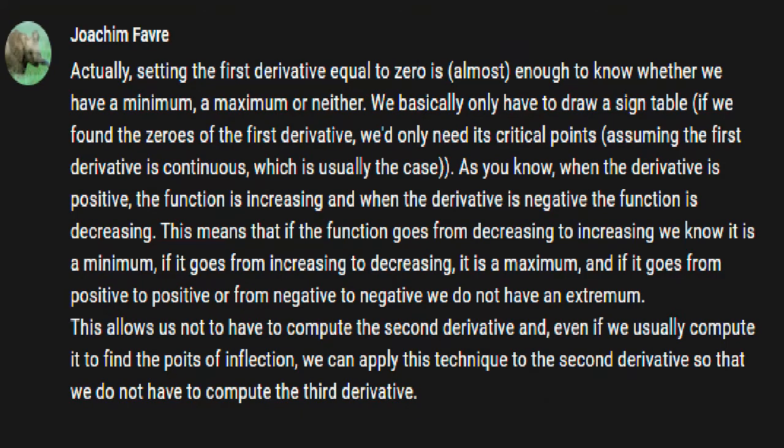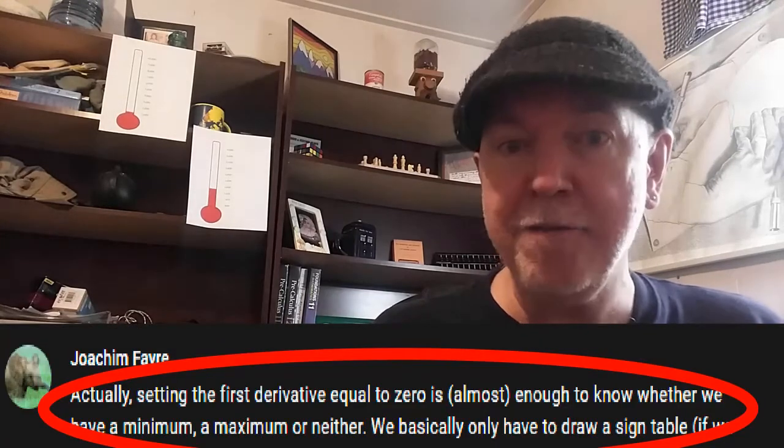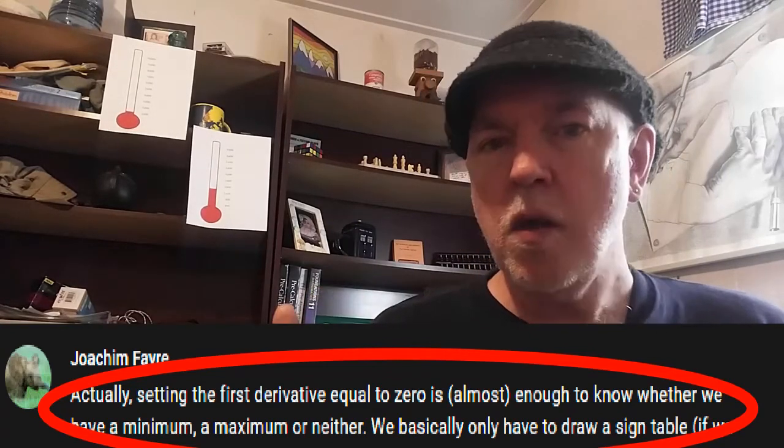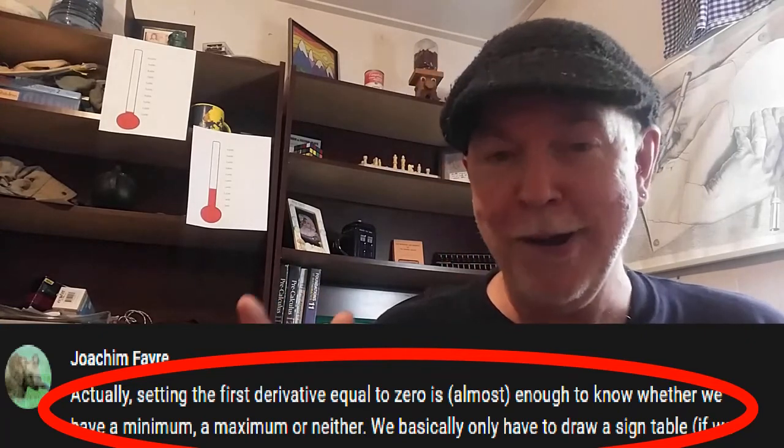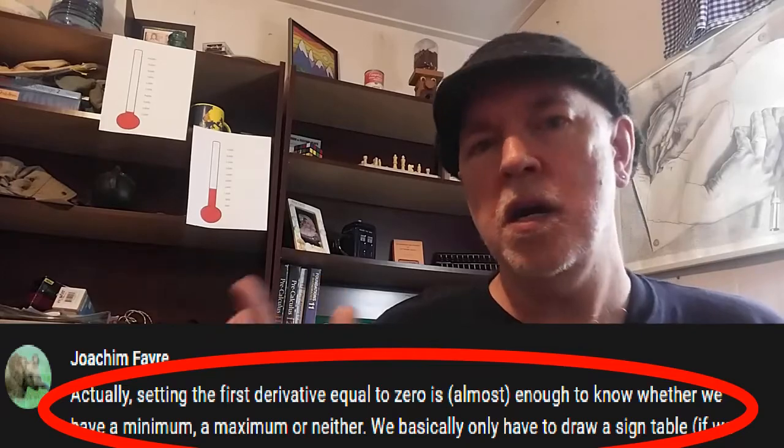Hat tip to Joachim Favre who pointed out in a previous video that setting the first derivative equal to zero of a function is almost enough information to tell us whether we have a maximum, a minimum, or neither at that point on the function.